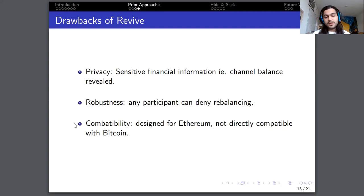And the other consequence of this validating requirement is robustness. Any single participant can deny rebalancing across the entire network, which makes it difficult to execute these flows atomically. Finally, the protocol was designed for Ethereum. So it has a smart contract implementation, and that makes it not directly compatible with Bitcoin.